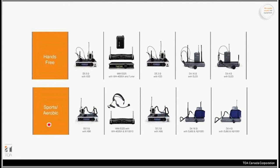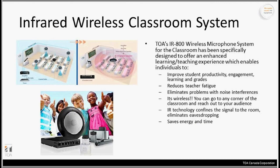The sports aerobic-style microphones are more robust, with an arm pouch option where the instructor can put the transmitter on their arm. The wire connecting to the microphone itself is built to handle more use. Where we're seeing the most growth in infrared is infrared wireless classroom systems — the IR800 wireless microphone audio reinforcement kit is designed for school voice-lift applications.